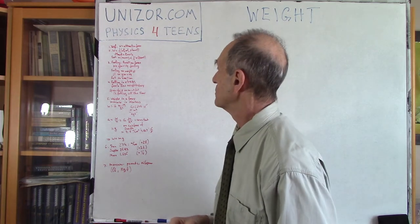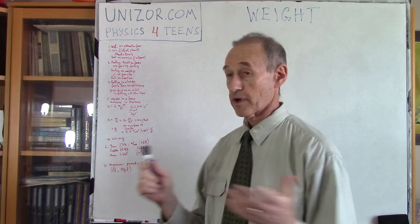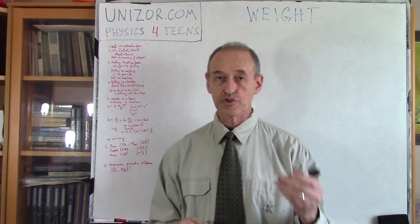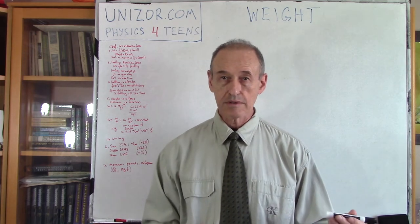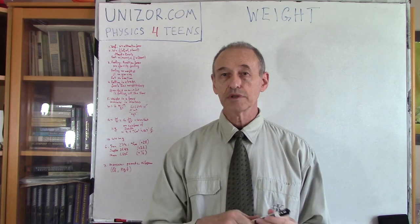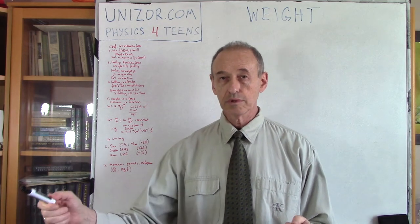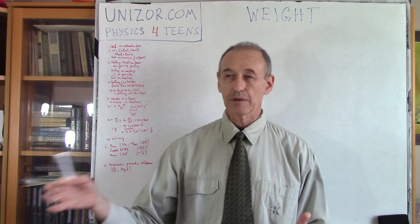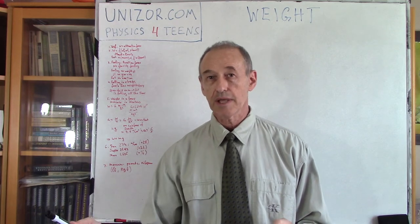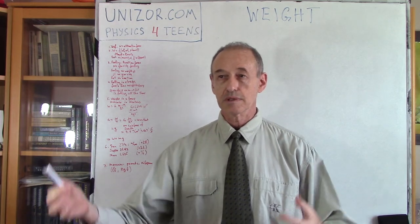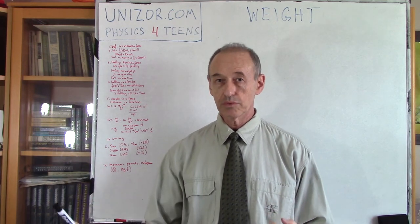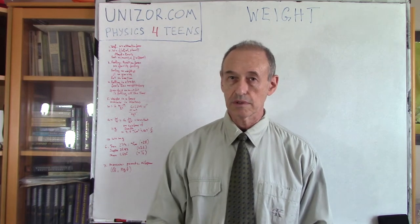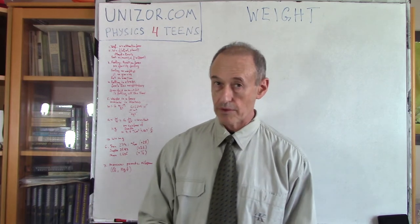Just for example, if you take the same object on Earth and put it on the Moon, the weight on the Moon will be about six times less, because the gravity of the Moon is about one-sixth of the gravity of the Earth.